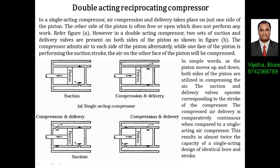In a double acting compressor, two sets of suction and delivery valves are fitted on both sides of the piston. When the piston moves from right to left, suction occurs on the right side while compression and delivery occur on the left side. When the piston moves from left to right, suction occurs on the left side while compression and delivery occur on the right side. For every movement of the piston, a compression process takes place. This is called a double acting reciprocating compressor.